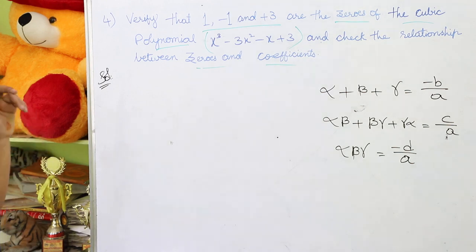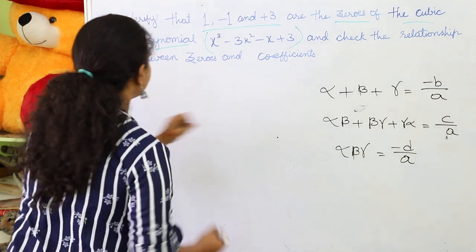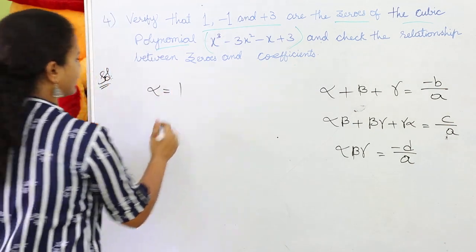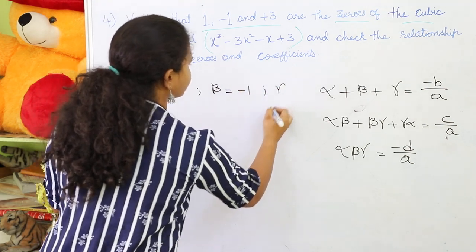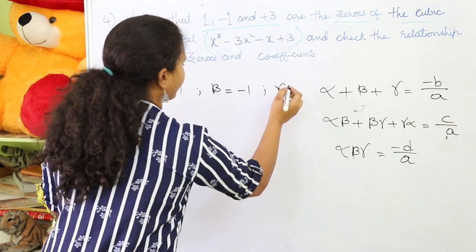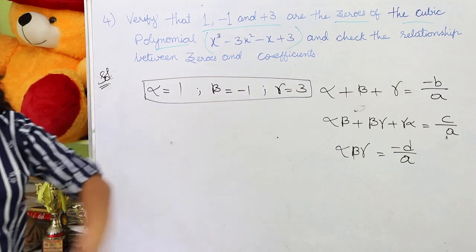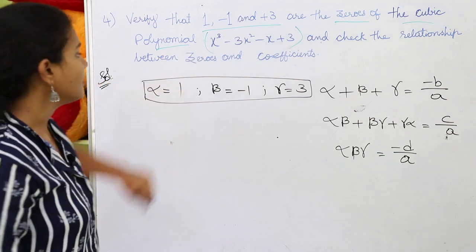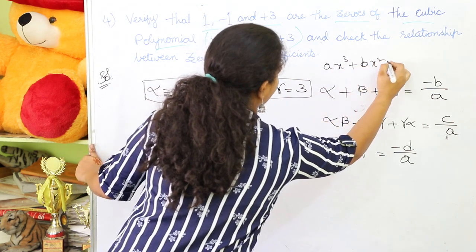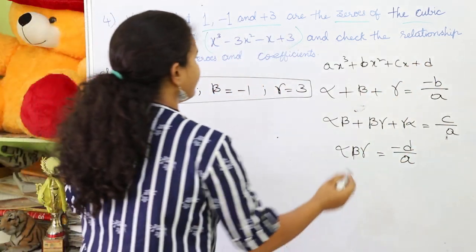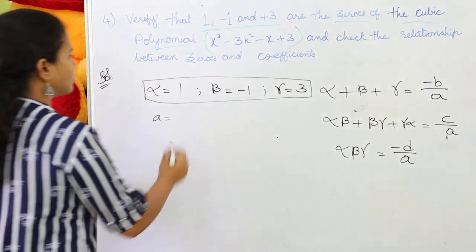Coming back to the relationship between zeros and coefficients: let alpha = 1, beta = -1, and gamma = 3. For the cubic polynomial ax³ + bx² + cx + d, comparing with our given polynomial x³ - 3x² - x + 3, we get: A = 1, B = -3, C = -1, and D = 3.